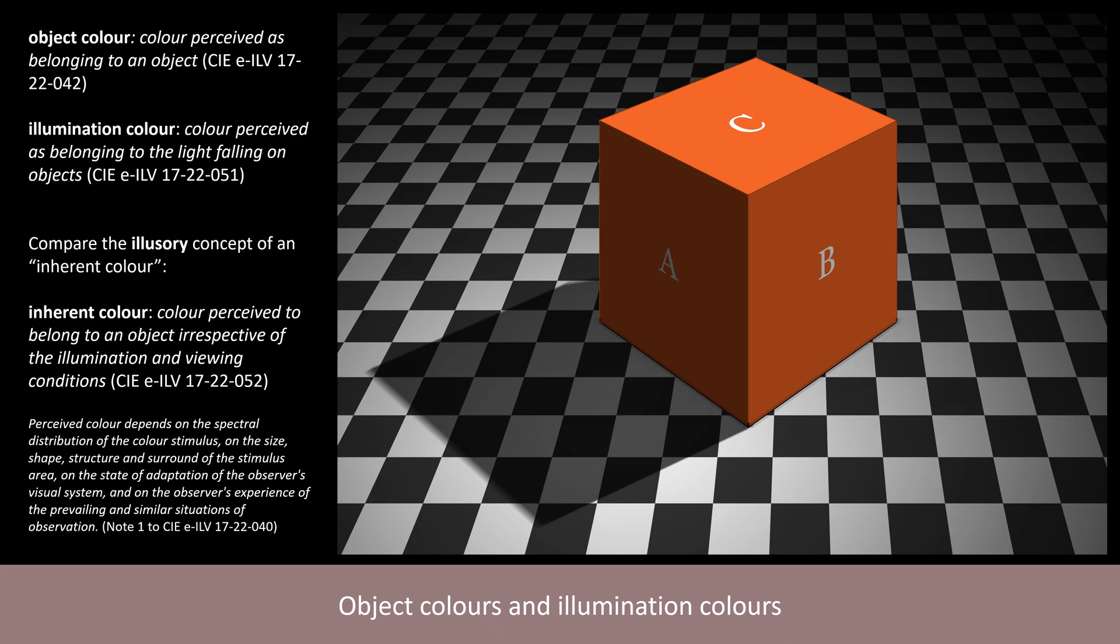But this degree of constancy is reduced under different kinds of illumination, on different backgrounds, and for different observers. And there is no principled way to maintain that any one of these object colour perceptions is the true or inherent colour.